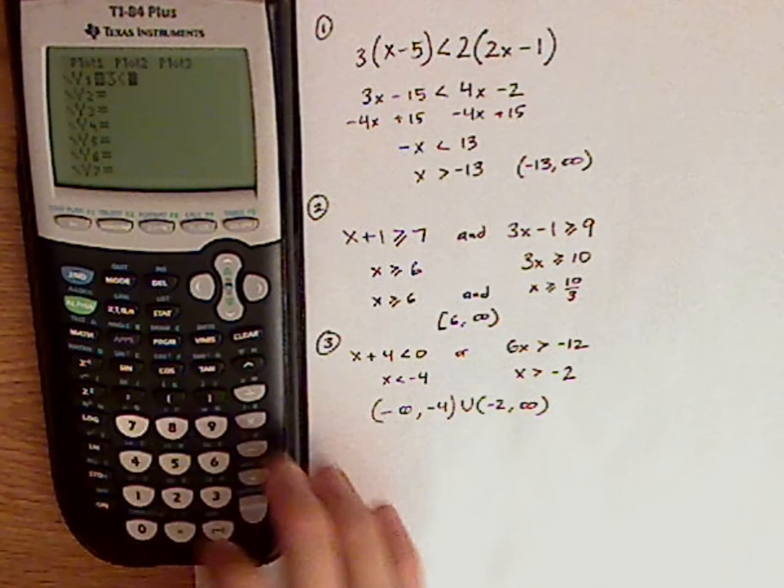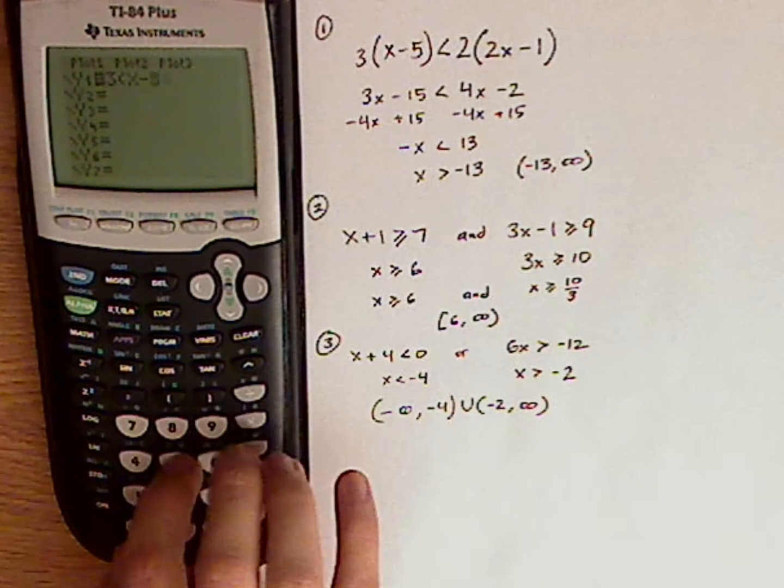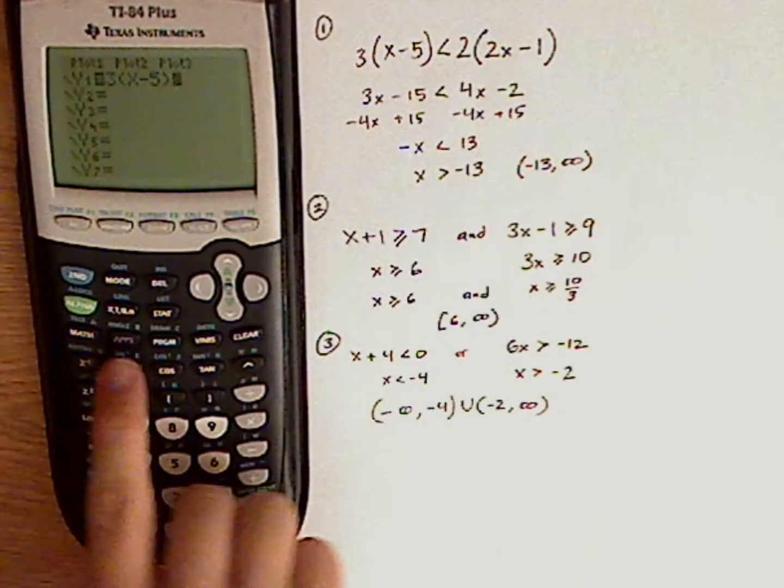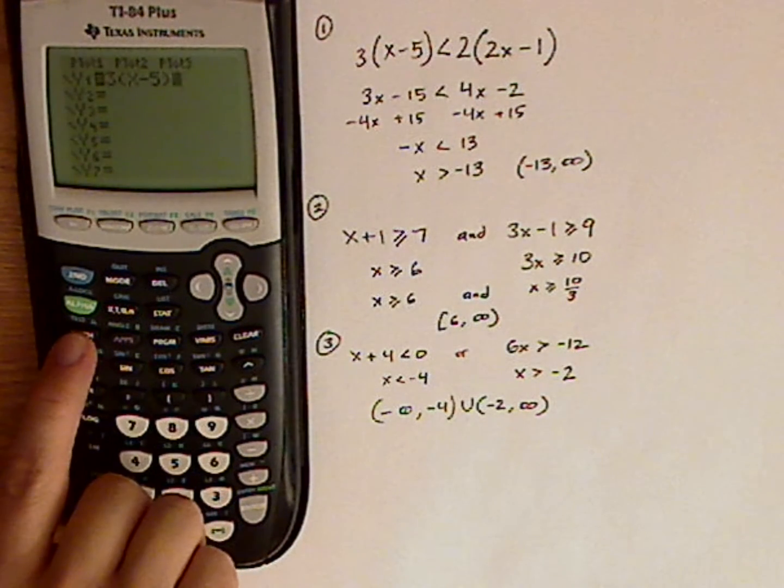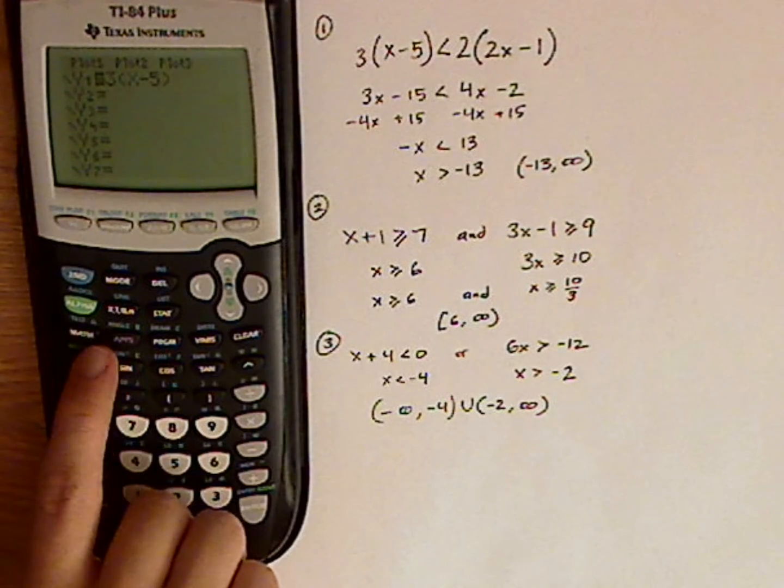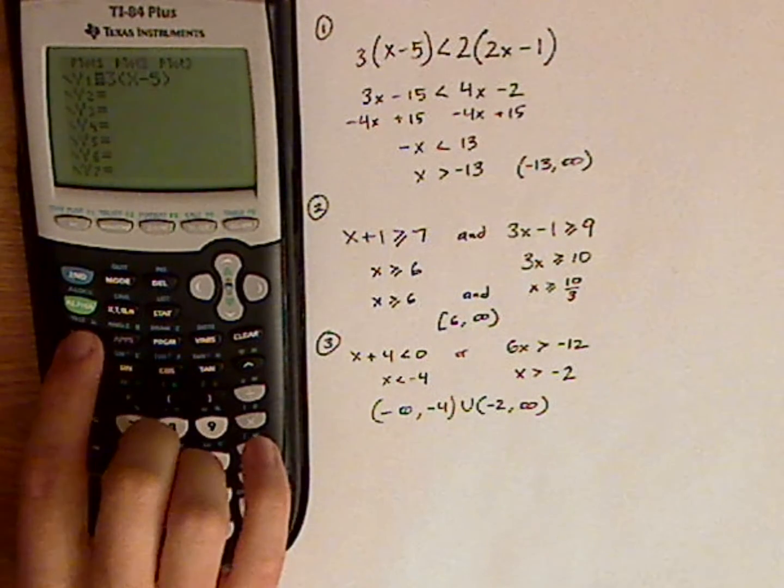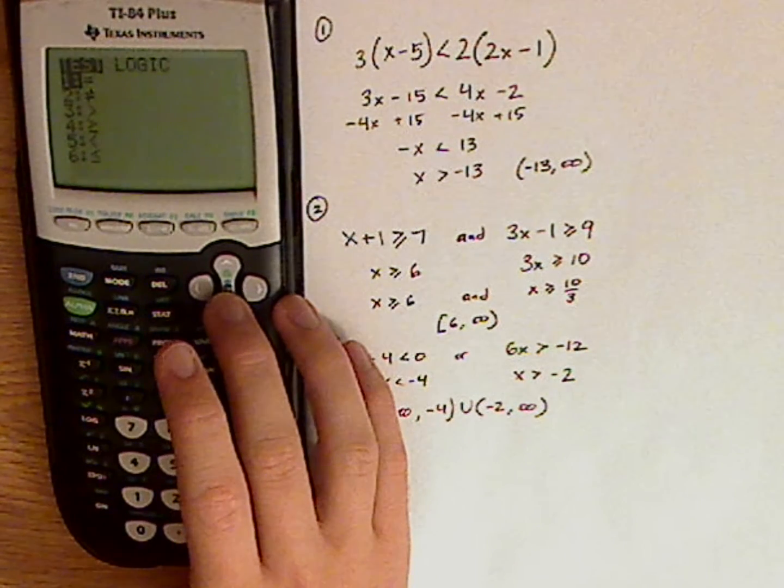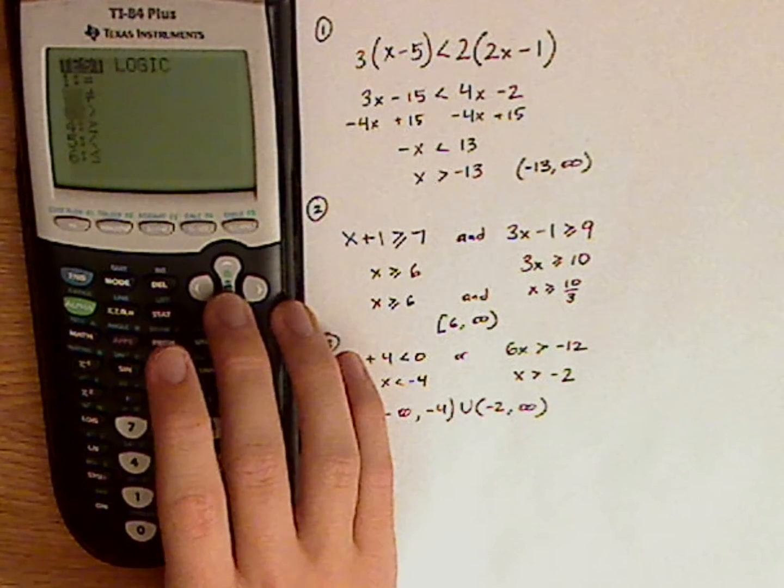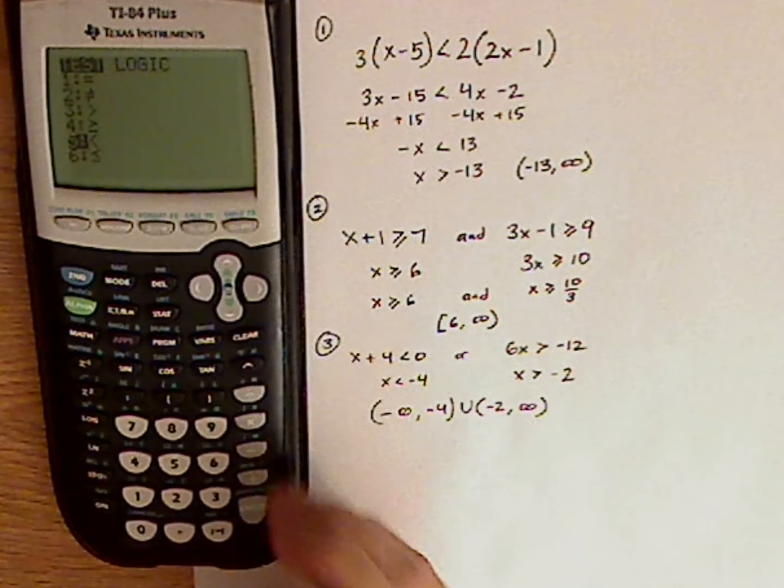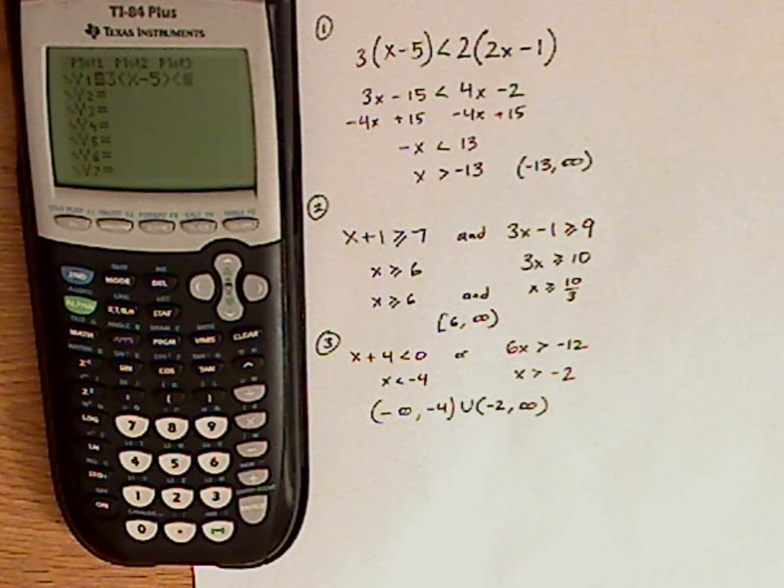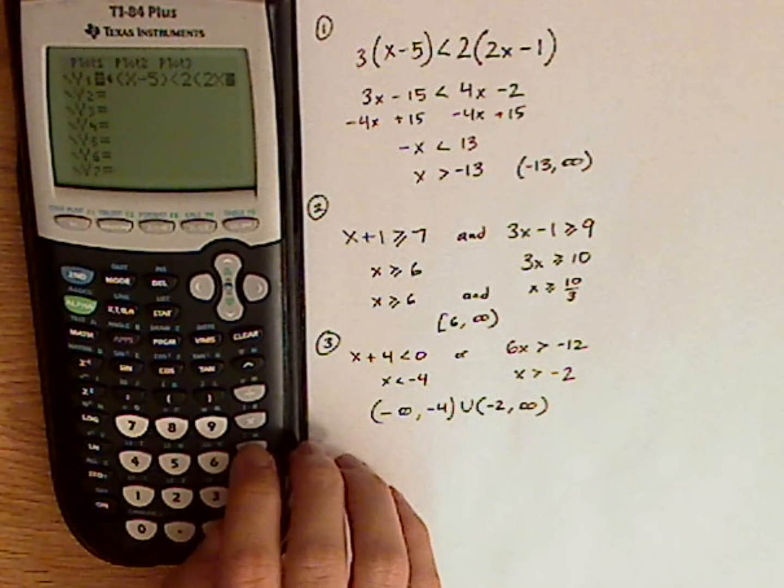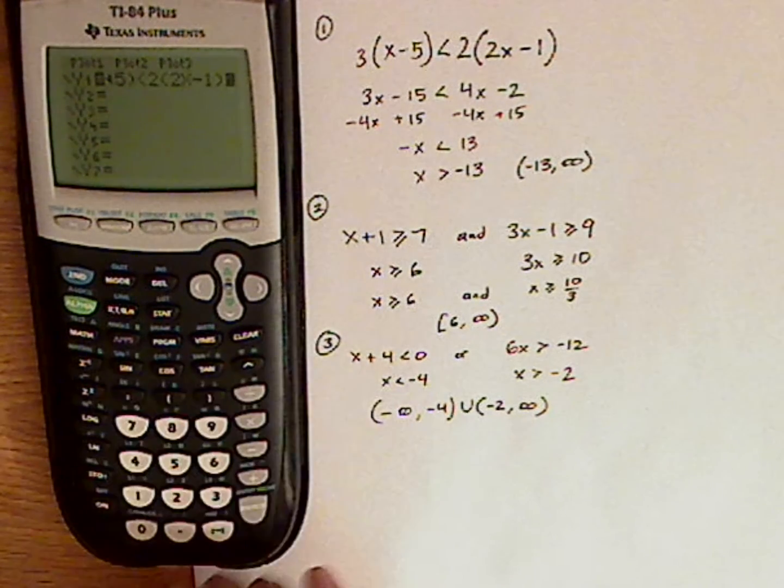So 3 parentheses x minus 5 closed parentheses. Now, to get the less than symbol, what you want to do is you want to get to tests, which is in blue. So that means you're going to push second, and then push the math button. And then you see under tests, you have all your equalities and inequalities. So just go down to less than, hit enter, there's your less than symbol, then 2 parentheses, 2x minus 1 closed parentheses, enter.